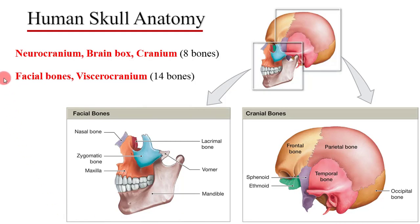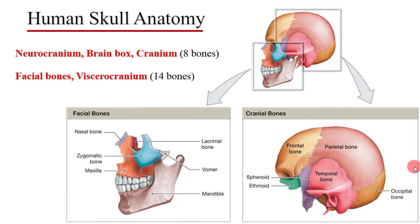As we've discussed in the previous section, the skull is divided into two parts: the viscerocranium and the neurocranium. The viscerocranium refers to the bones that form the face, while the neurocranium refers to the bones that house and protect the brain. In today's lecture, we are going to be covering the bones of the viscerocranium, including the nasal bones, the maxillary, the zygomatic bones, the mandible, and more.